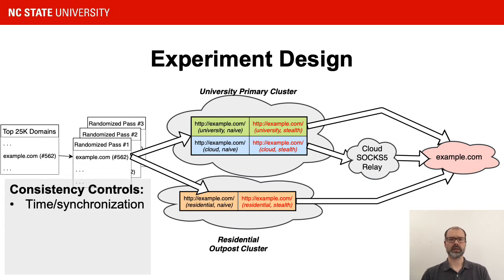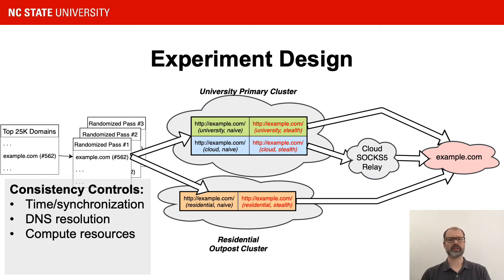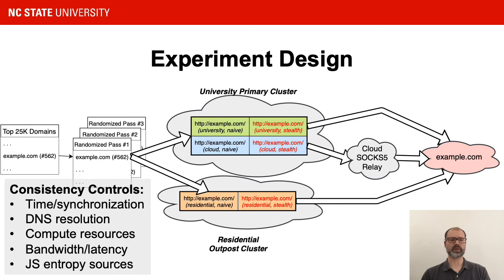We make sure that we launch all the crawls — all visits to the same URL — within a very tight time window, on average less than a 100 millisecond launch window. We use the same DNS servers for all endpoints no matter what network they were in. We lock down compute and network resources to the lowest common denominators in terms of bandwidth, latency, available CPU and memory. And we use tricks from the Google Catapult project to render uniform sources of entropy available to JavaScript, such as random number generation or the time of day functions.